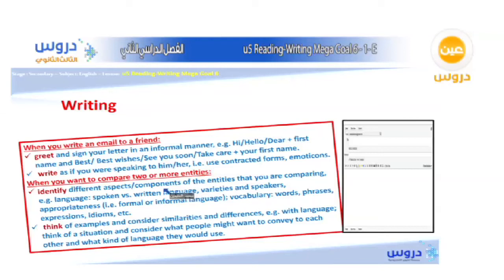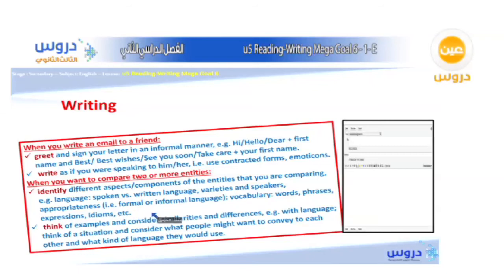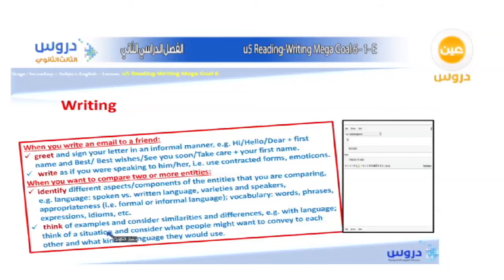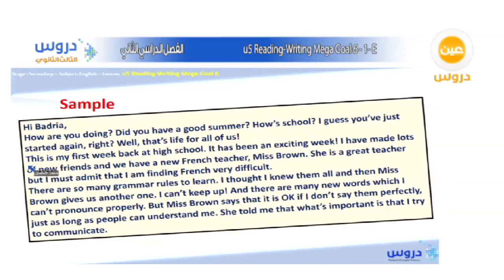When you want to compare two or more entries, identify different aspects or components of the entries that you are comparing. For example, language: spoken versus written language, varieties and speakers, appropriateness — that is formal or informal — vocabulary, words, phrases, expressions, idioms, etc. Think of examples and consider similarities and differences. For example, with language, think of the situation and consider what people might want to convey to each other and what kind of language they would use.